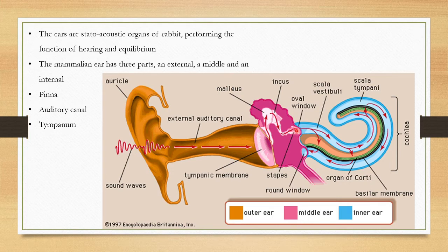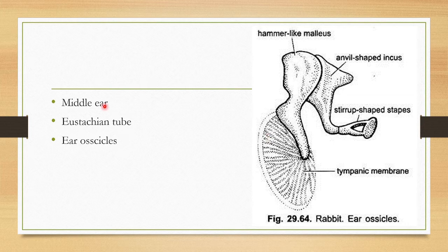The middle ear communicates with the internal ear through two openings: the oval window on the upper side and the round window on the lower side. The first bone is the hammer-shaped malleus, the second is the anvil-shaped incus, and the third is the stirrup-shaped stapes.